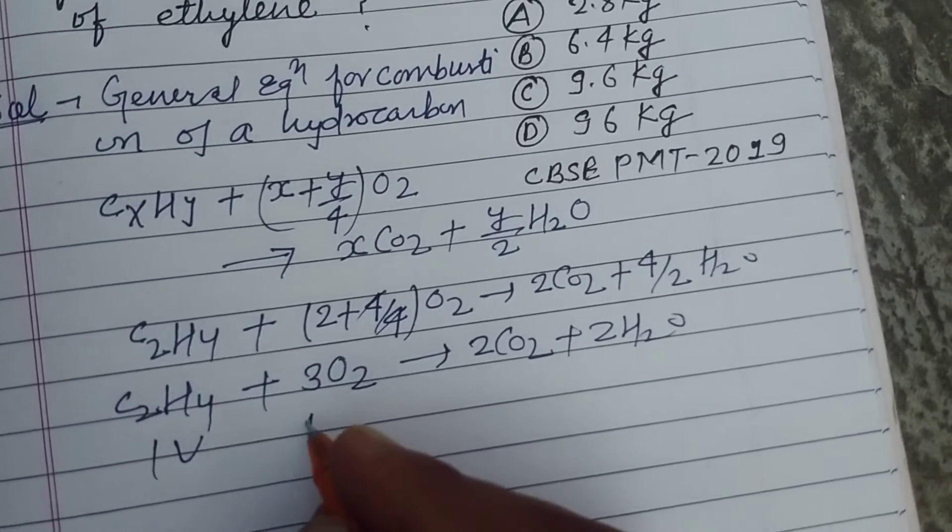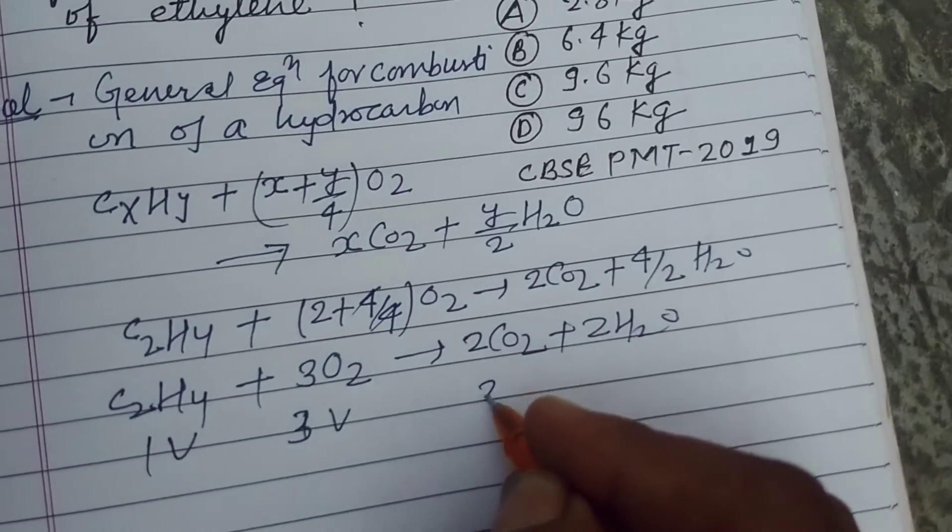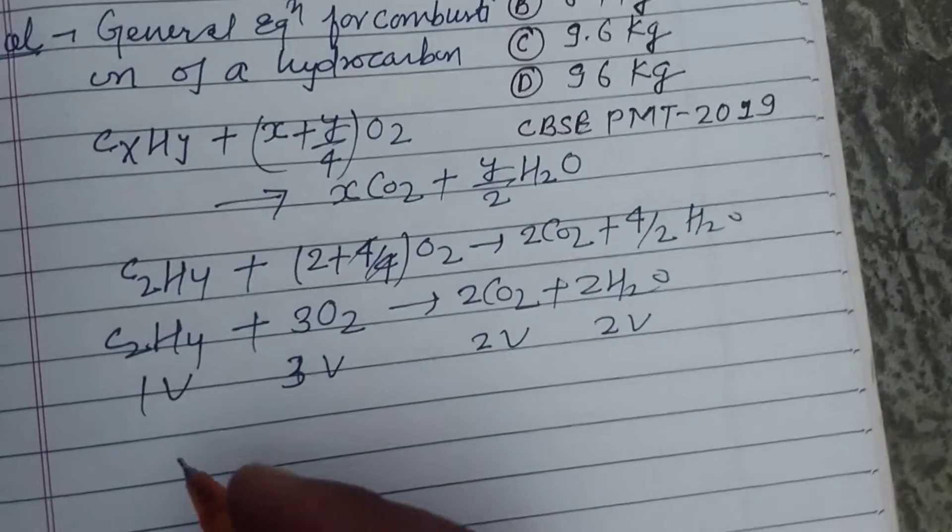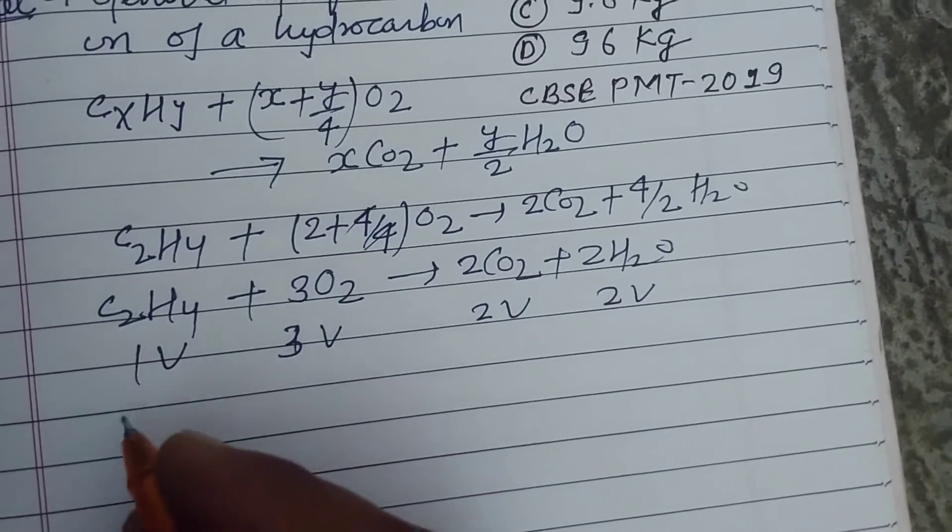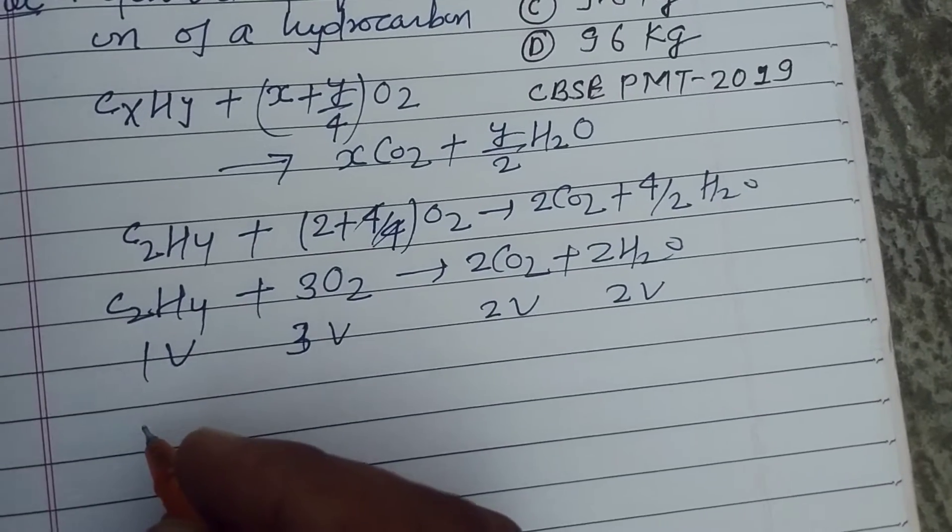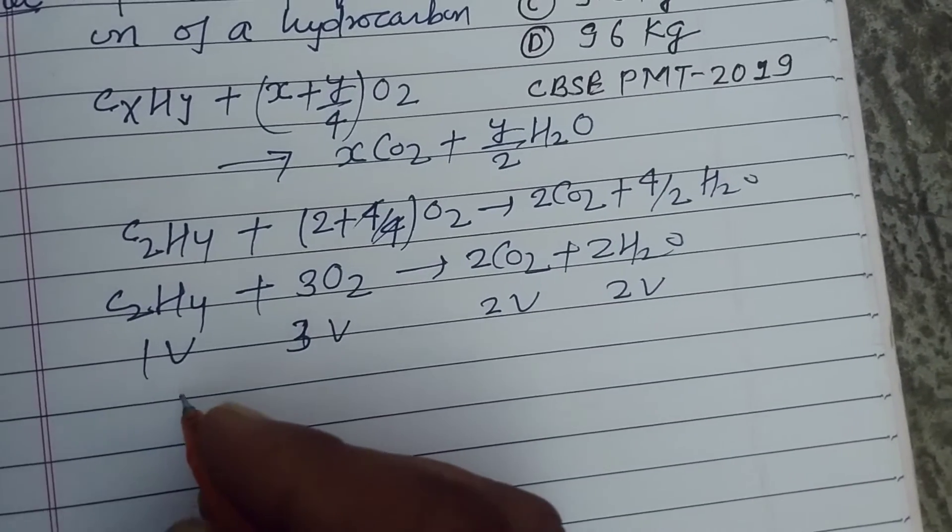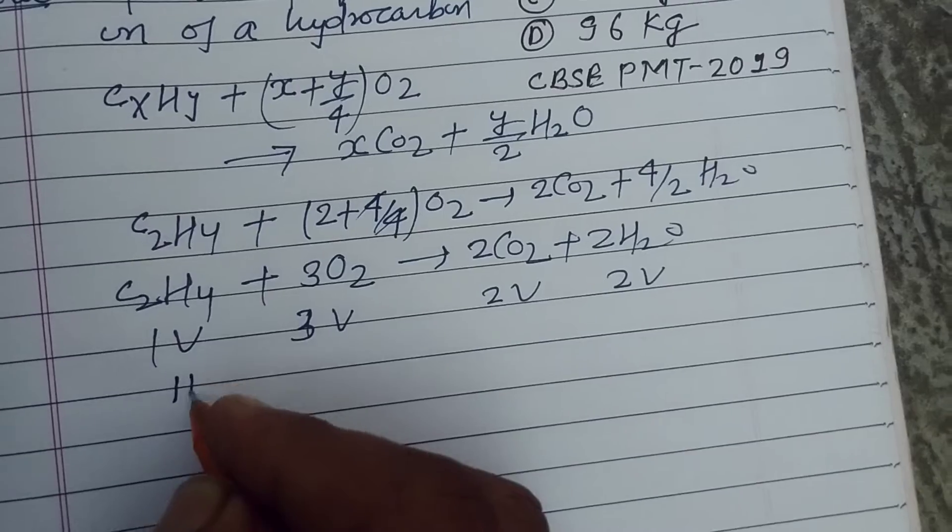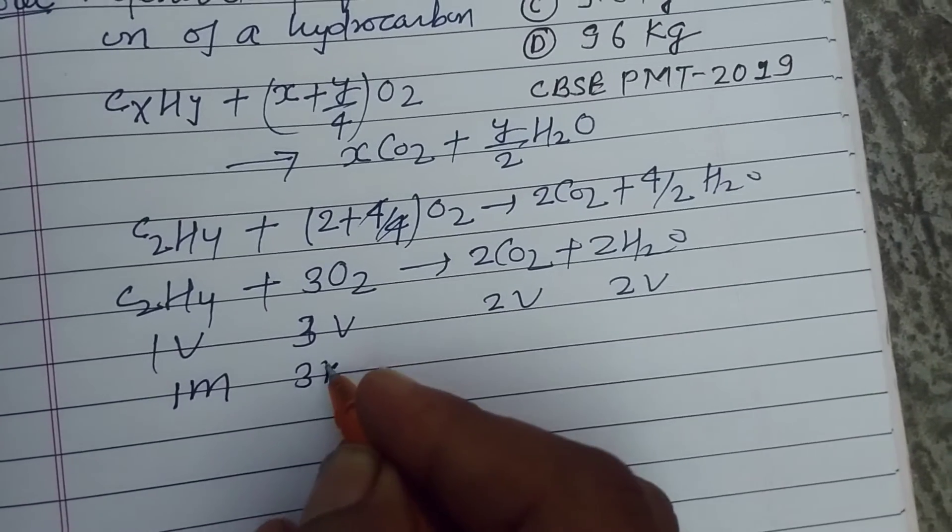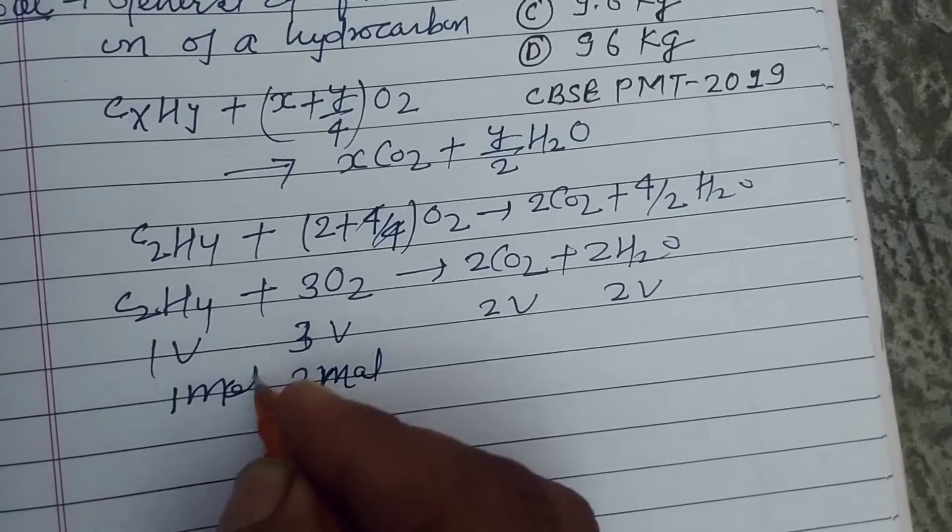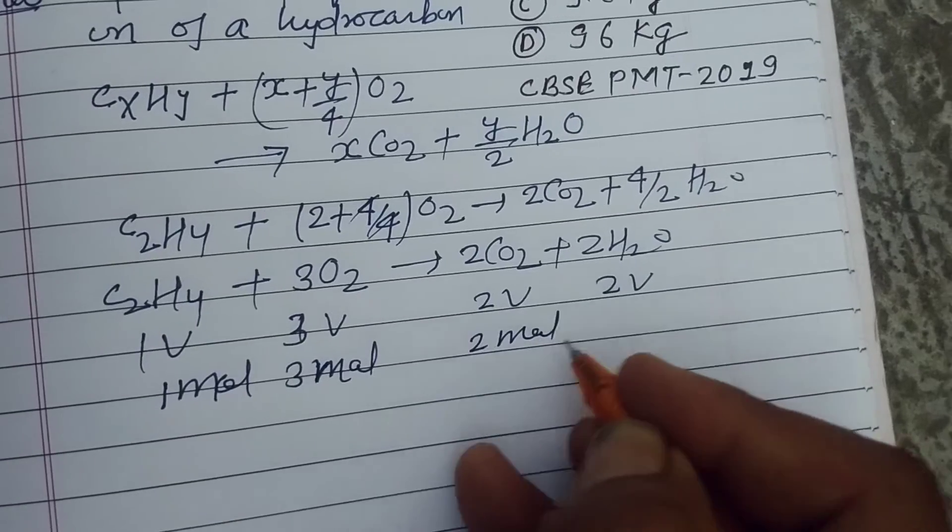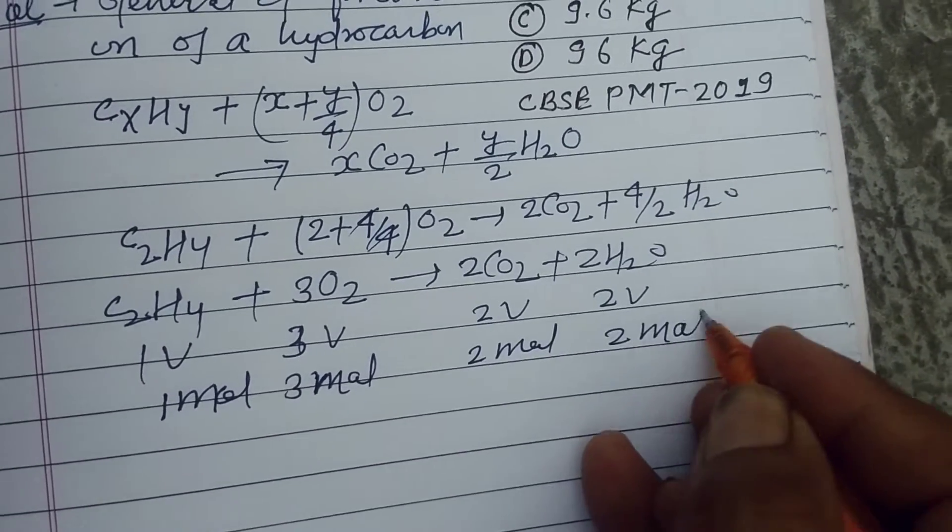So here, one volume, three volume, two volume, two volume. According to Gay-Lussac's law, the gases also combine in their moles. So this is one mole, this is three mole, two mole, and two here.